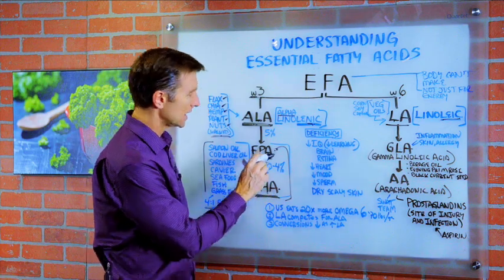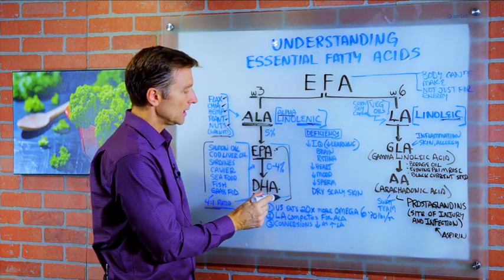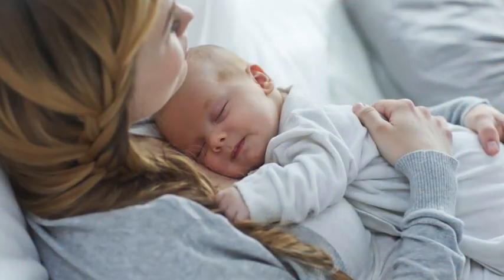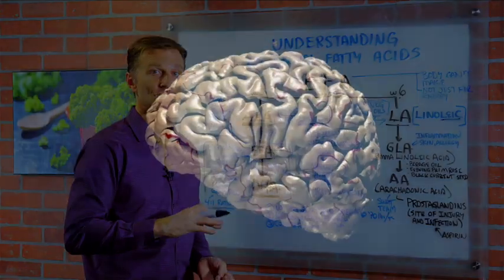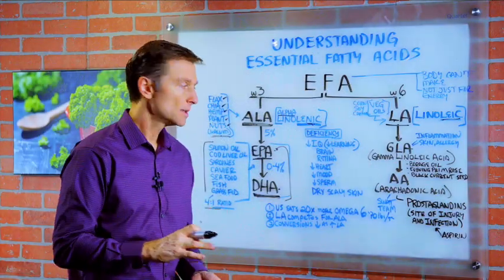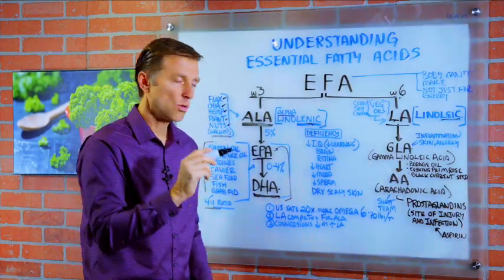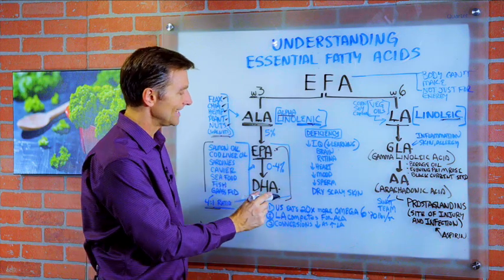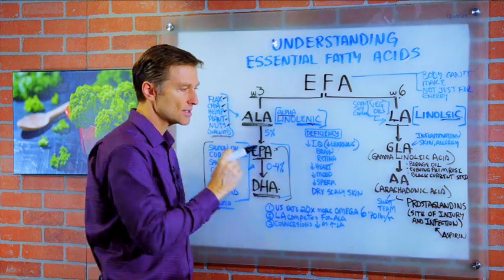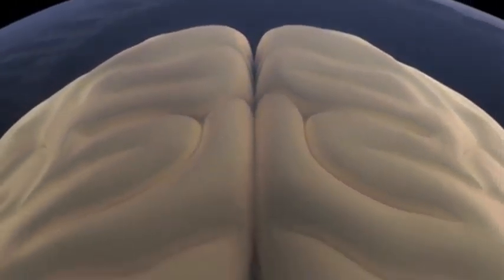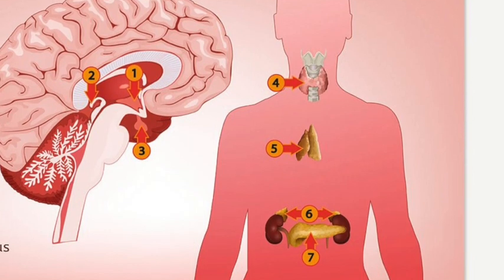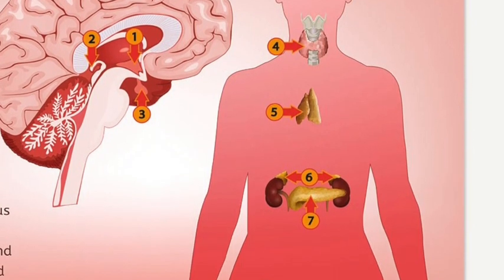I want to pause on EPA and DHA for a second. If you deprive an infant of DHA, the IQ will go down, the size of the brain is limited, the child will have stunted growth, and vision will be poor. DHA and EPA are essential in brain function and formation, the retina, sex hormones, endocrine function, and many other functions.